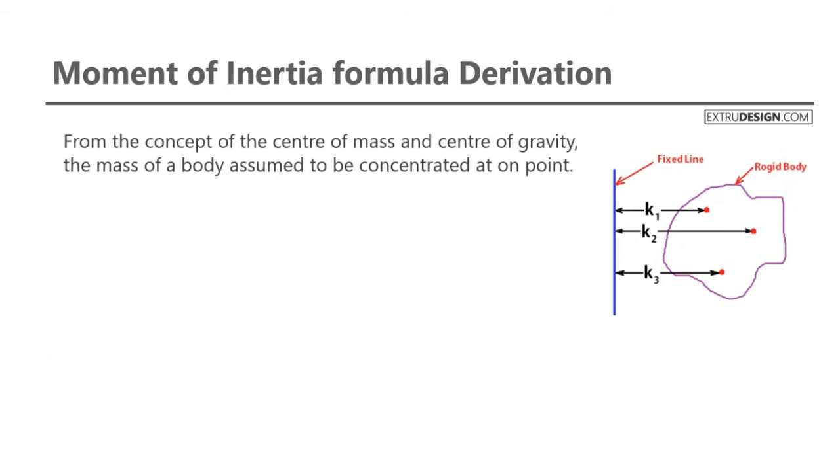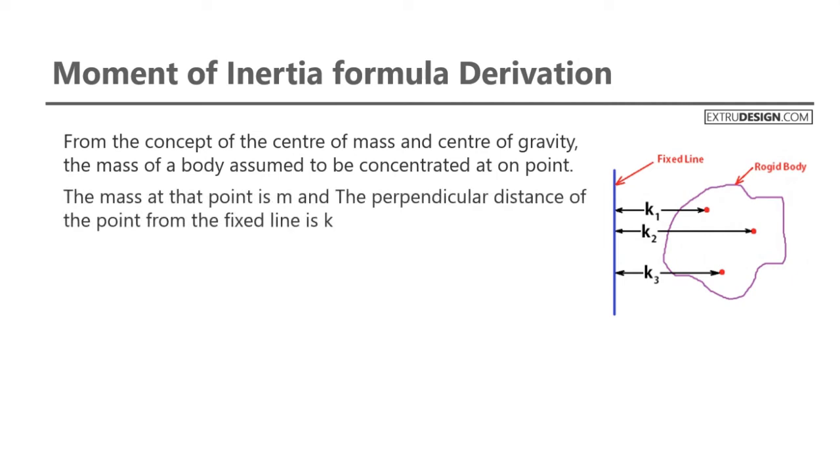From the concept of center of mass and center of gravity, the mass of the body is assumed to be concentrated at a point. The mass at that point is m. The perpendicular distance of the point from the fixed line is k. Hence, m1 k1 square plus m2 k2 square plus m3 k3 square and so on equals m k square. This is equation 2.